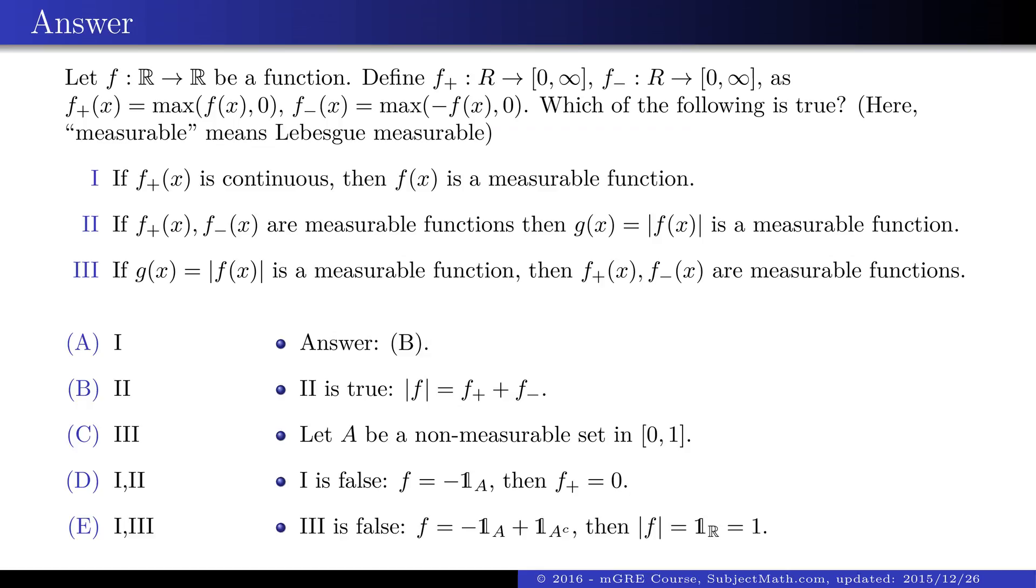Using those two indicator functions, we create a non-measurable function. However, its absolute value is a constant function 1, thus measurable.